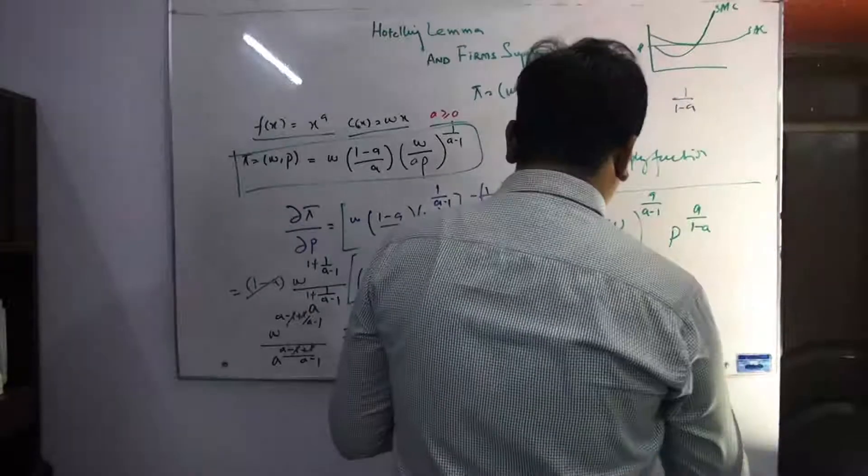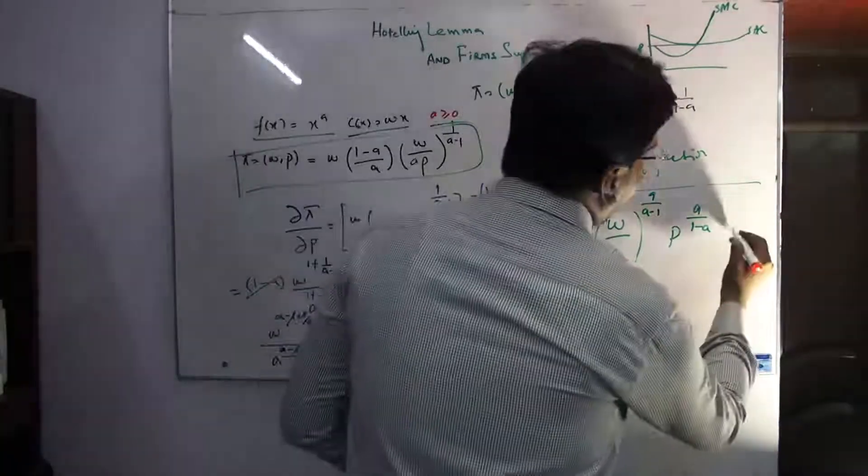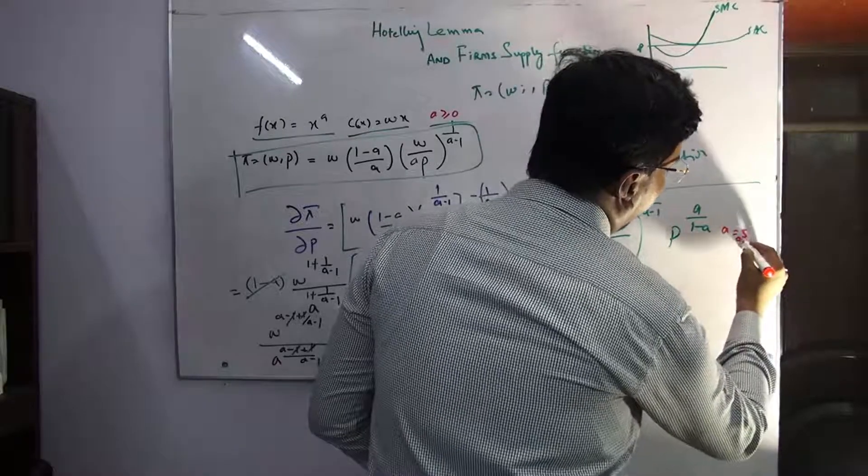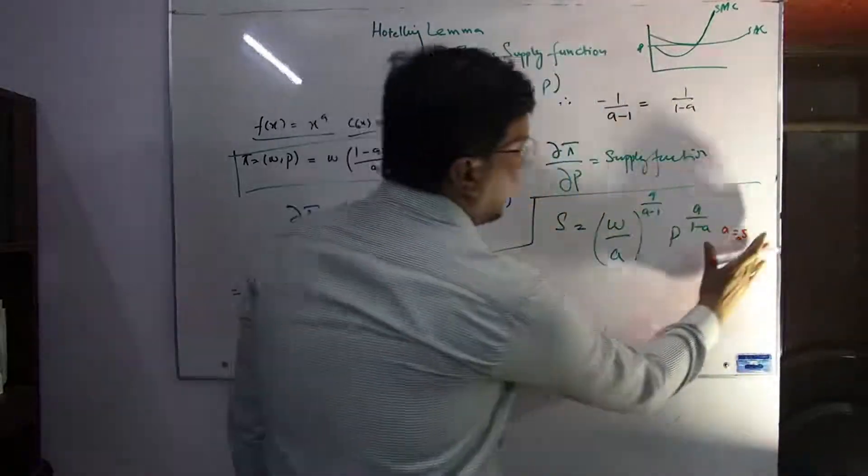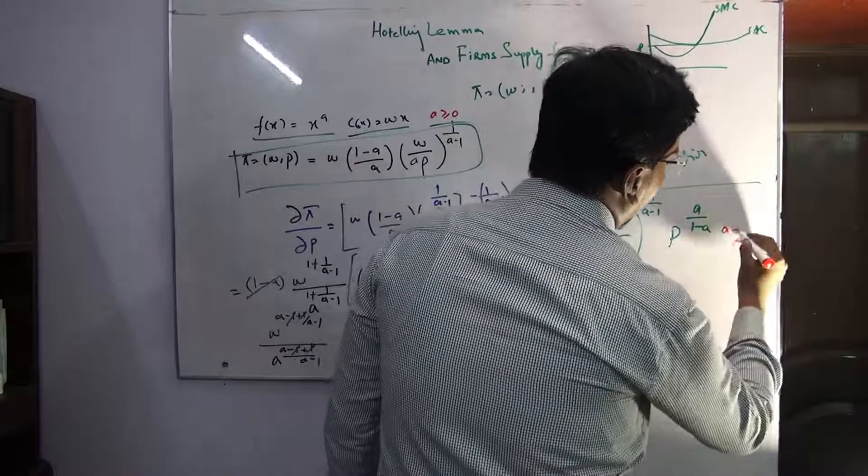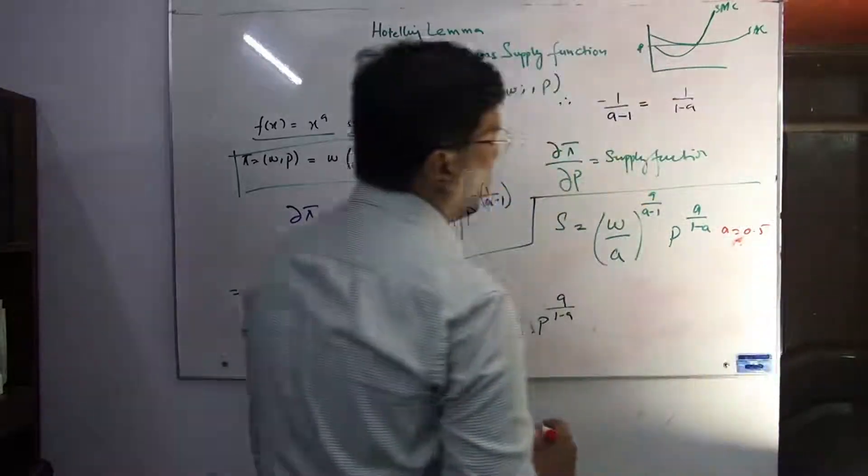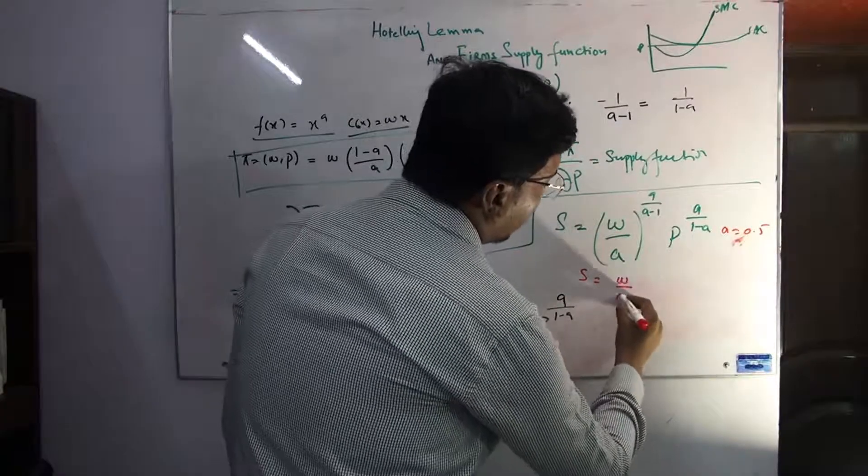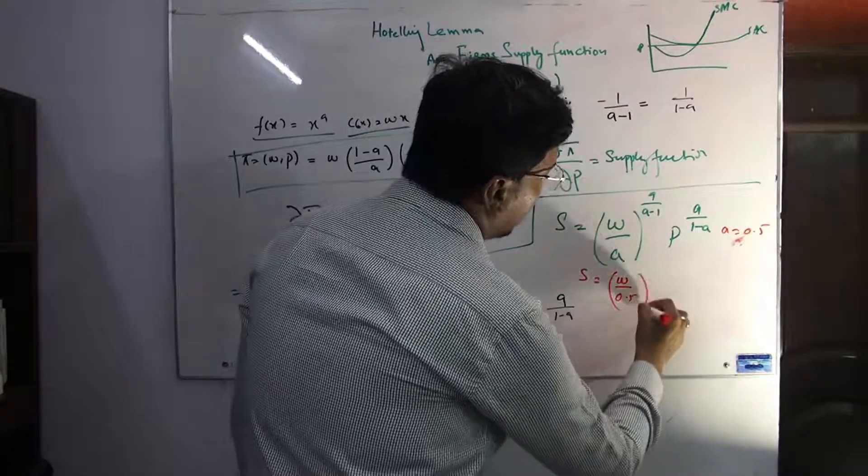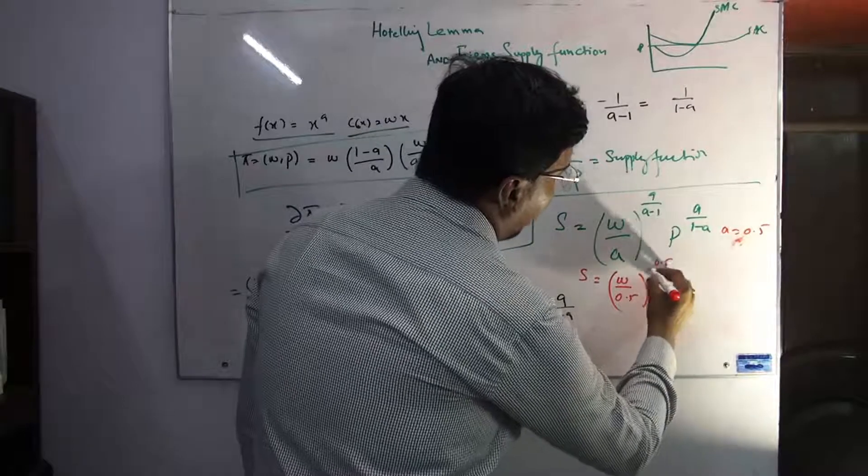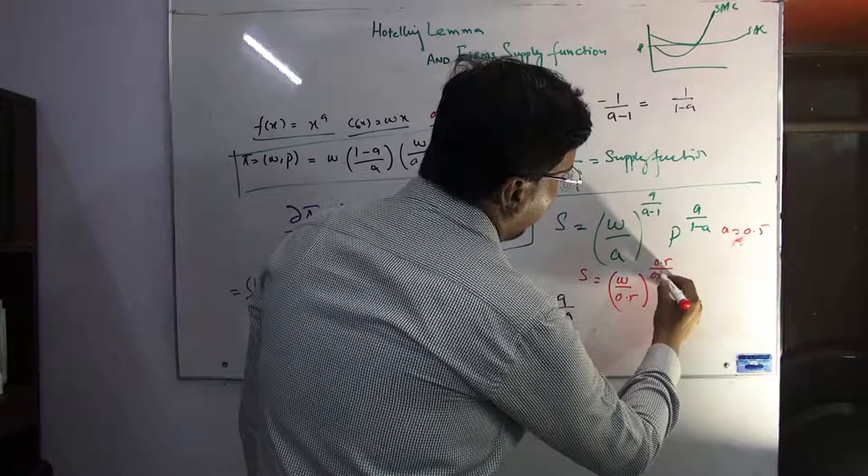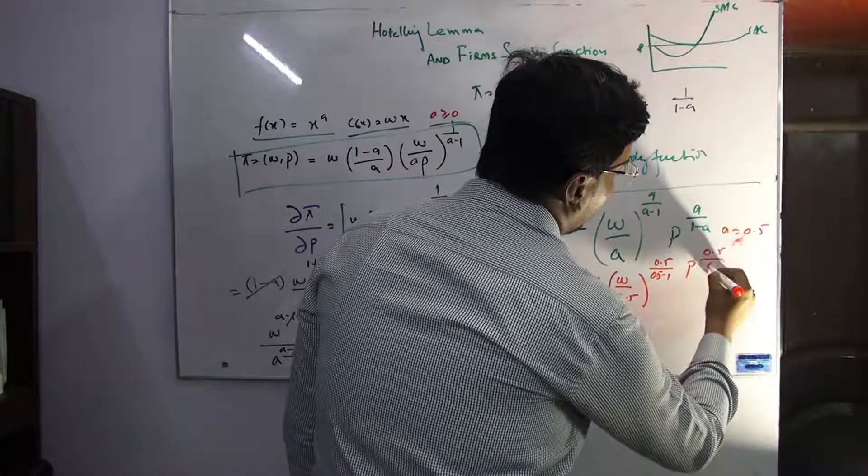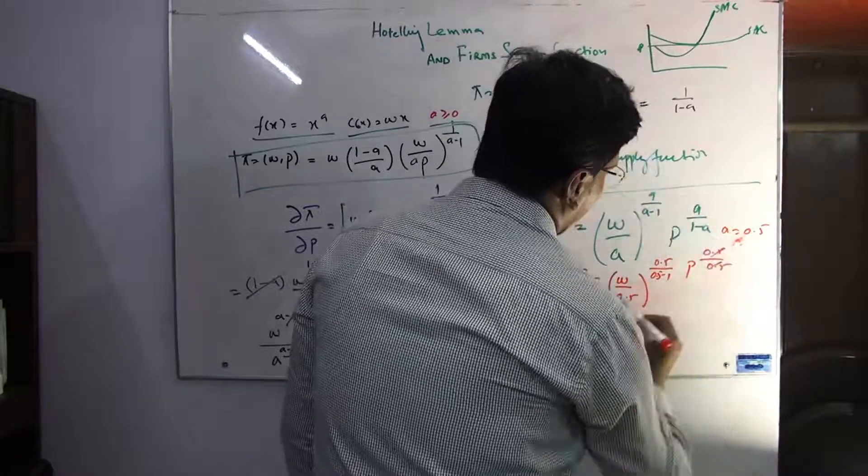Here it's in positive form, but actually it's not like that. Now if you look at this, let me show you for easiness. If a is equal to 0.5, let's take 0.5. Now look, S = (w/0.5) with the whole power being 0.5/(0.5-1).